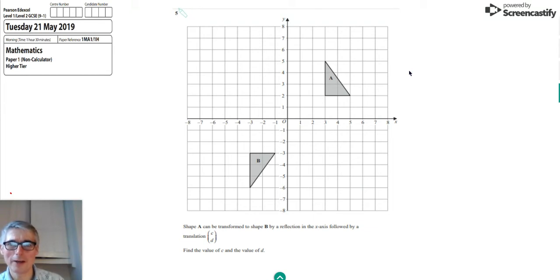This is a question about translations and transformations on a graph. We're told here that shape A can be transformed to shape B by a reflection in the x-axis followed by a translation, which is given in vector form CD. We're asked to find the values of C and D in this translation.